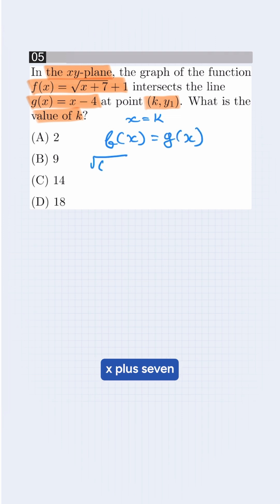It'll be √(x+7)+1 is equal to x-4. We subtract 1 from both sides. This will be √(x+7) is equal to x-5.